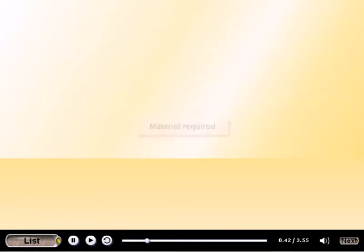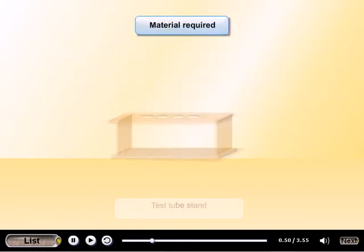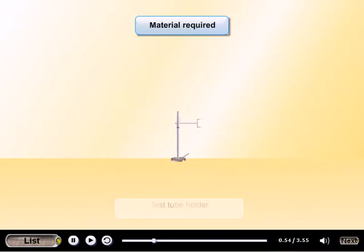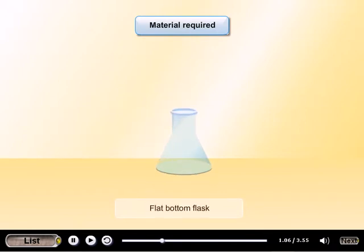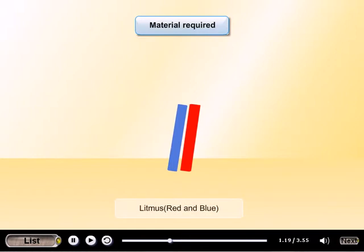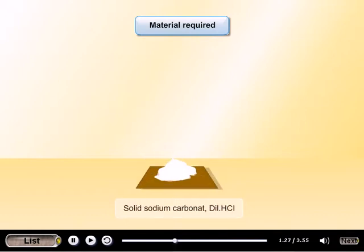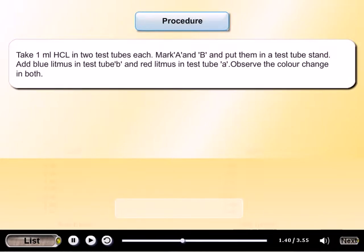Materials required: Test tubes, test tube stand, test tube holder, cork, droppers, boiling tube, burner, flat bottom flask, thistle funnel, beaker, litmus red and blue, zinc metal granules, solid sodium carbonate, diluted HCl.